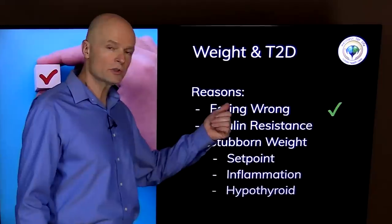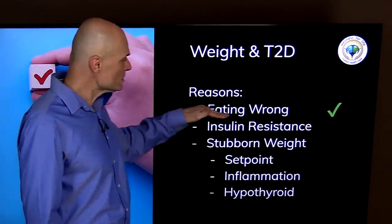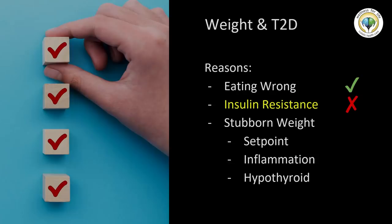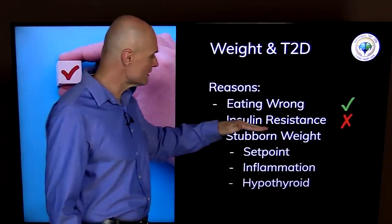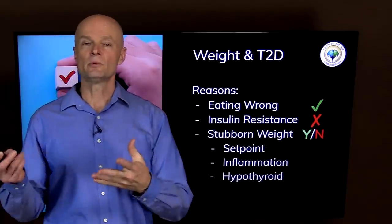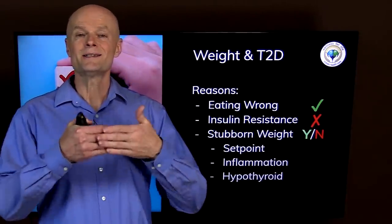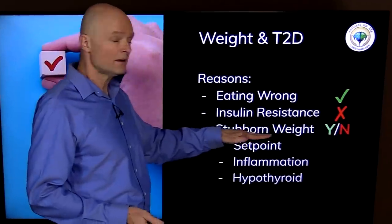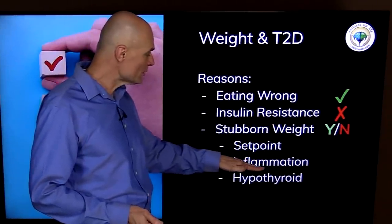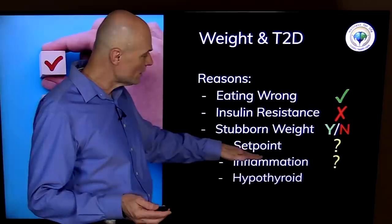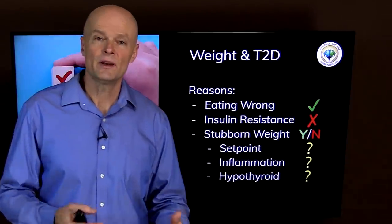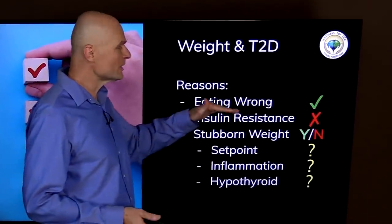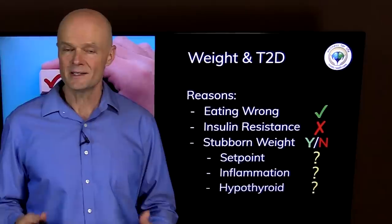How are we doing now on our checklist? Well, we stopped the sugar, the white flour, and the processed food, so most of the eating wrong issue is handled. What about insulin resistance? No, we measured it. Insulin is high, HOMA-IR is high, it's still an issue. What about stubborn weight? Well, it's up to you. If you reach your ideal weight or if you are steadily losing at least some weight, then you're okay. If you're not losing any weight, then there's a problem, and it could be set point, inflammation, or hypothyroid. Do we know? Not really. We would have to dig deeper. We'd have to spend some more time, we'd have to learn more and do some trial and error, but at least we know more than we did, and we know a little bit more about what it isn't.